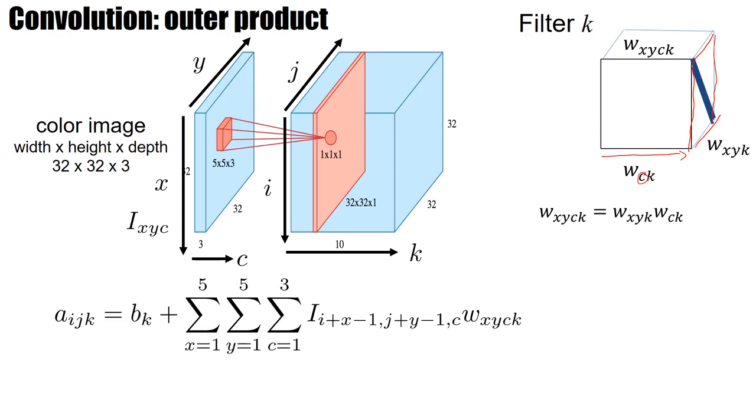And so the idea is that the total filter entry, x, y position, depth position or channel or color, and k is the filter index. This can be written by two components that are specific for this filter k. One is the depth index c, and the other one has the two spatial indices x and y.